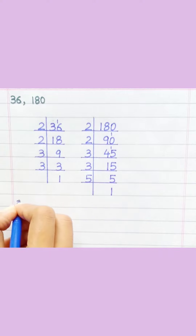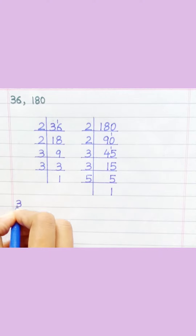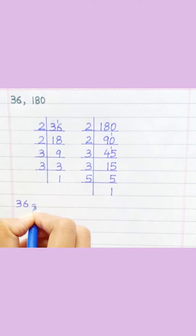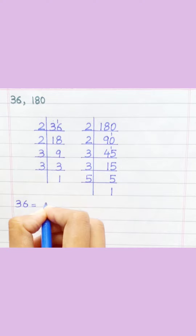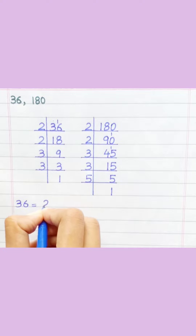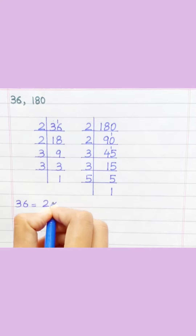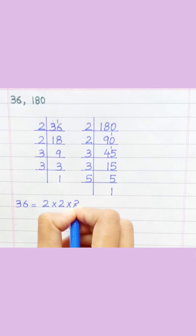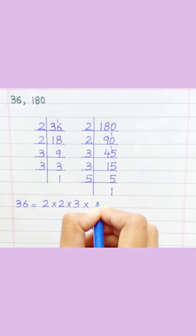Thirty-six equals two multiply two multiply three multiply three.